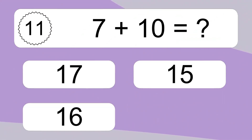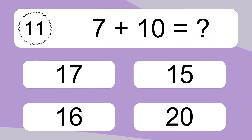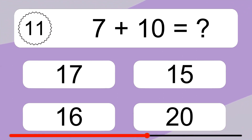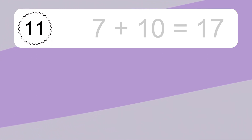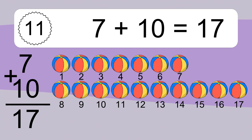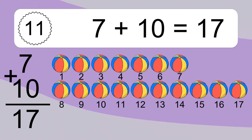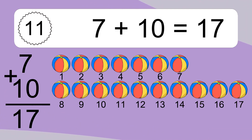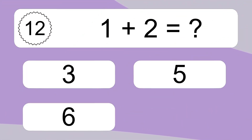7 plus 10 equals what? 7 plus 10 equals 17. Let's count it: 1, 2, 3, 4, 5, 6, 7, 8, 9, 10, 11, 12, 13, 14, 15, 16, 17.